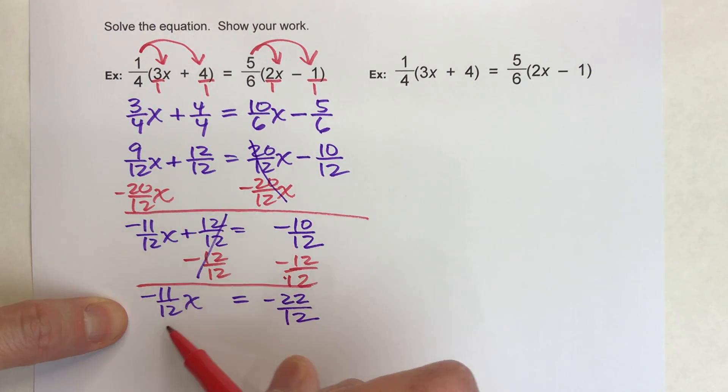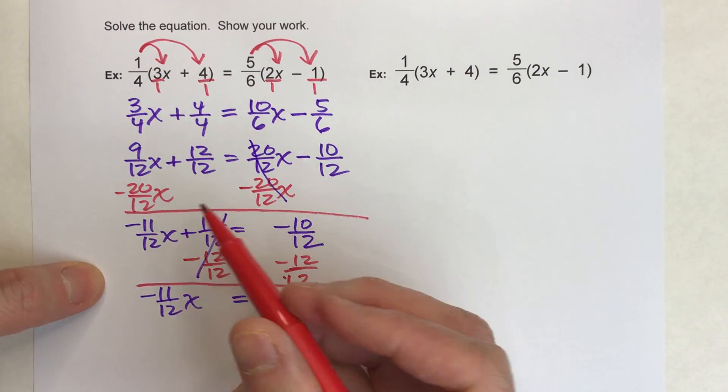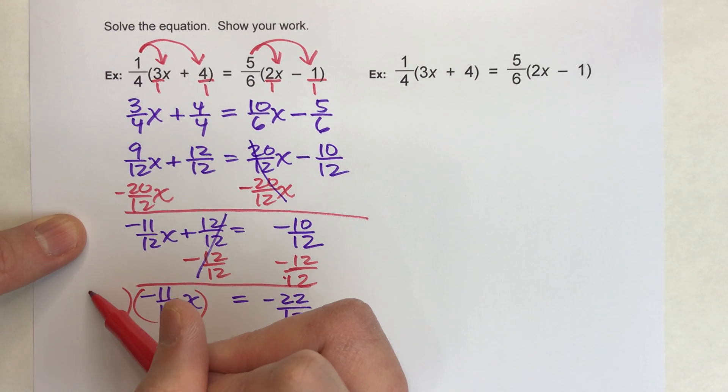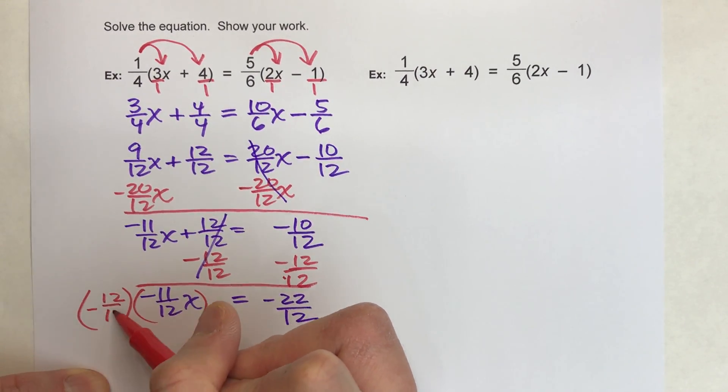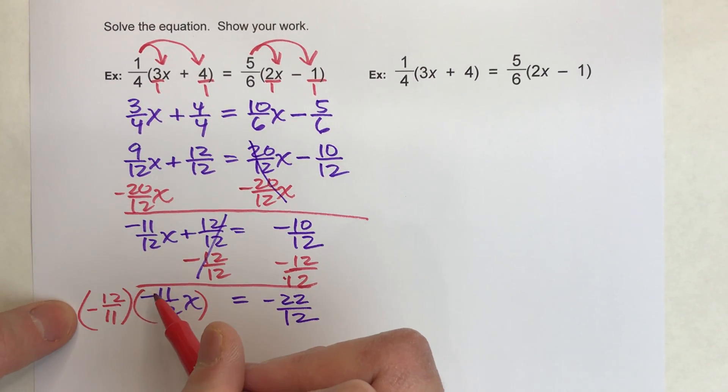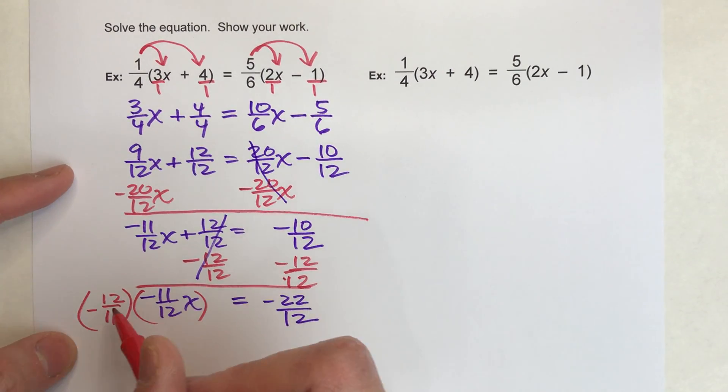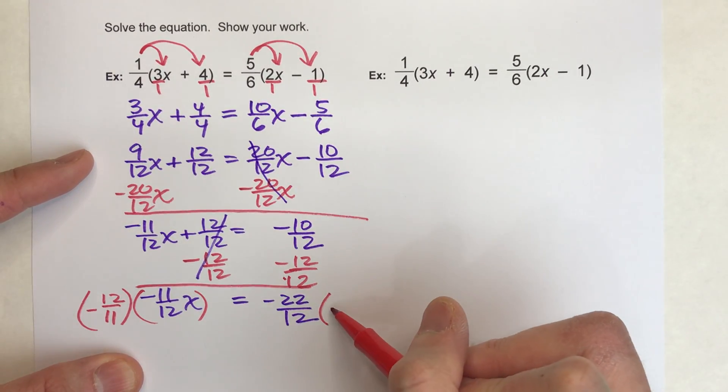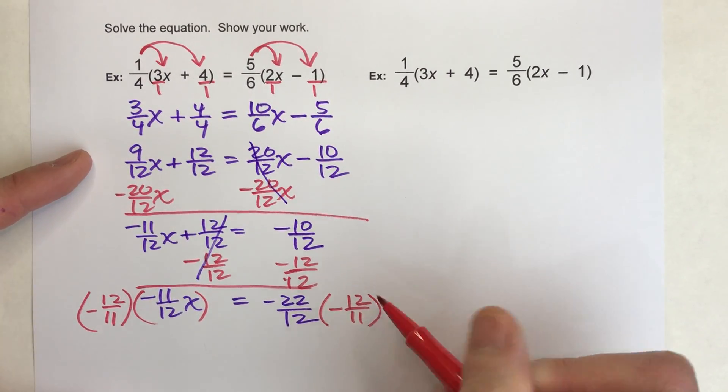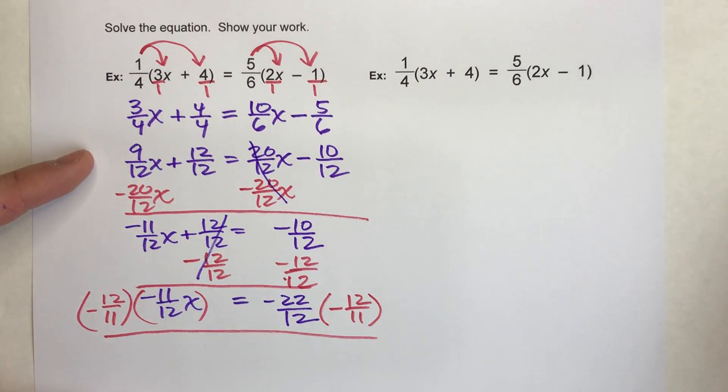Alright, now last step, let's undo this -11/12. So I'm going to multiply both sides by the reciprocal. And the reciprocal of -11/12 is -12/11, I'm just flipping it upside down. And notice it's still negative. We're not changing sides, we're just flipping it upside down. And I'll do the same to the other side. Alright, so when I do this, these two fractions undo each other to make one whole x equals drops down.